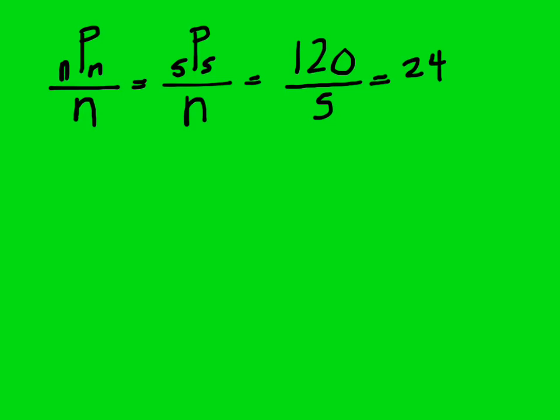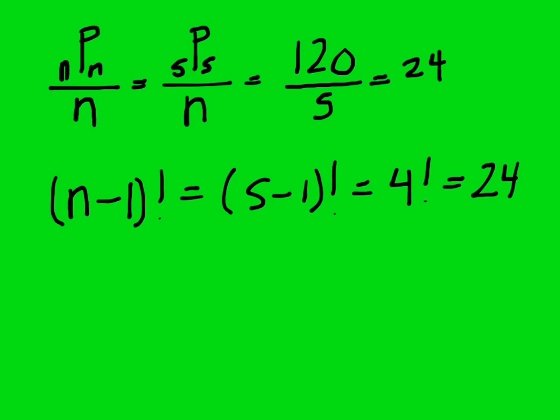Now, another way that I like to do, this is how I show my students, is that the number of possible ways you can sit in a circle is N minus one factorial. So instead of actually using this way, you just go five subtract one factorial, or four factorial, which is four times three times two times one, which is 24. So this is probably the best way of doing it, using N minus one factorial.